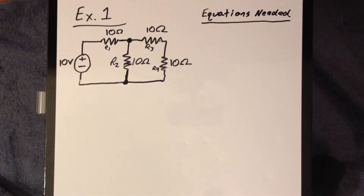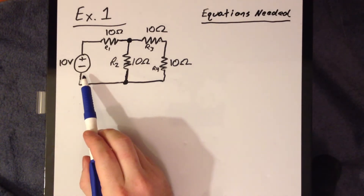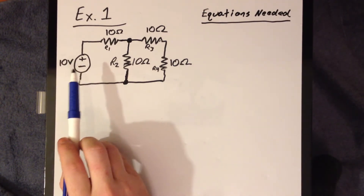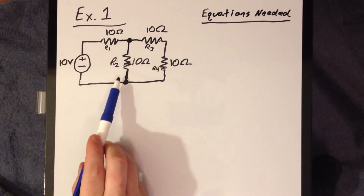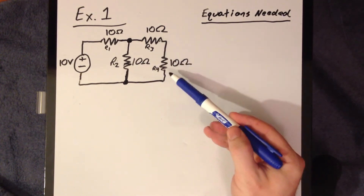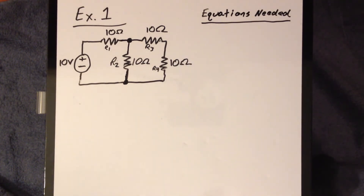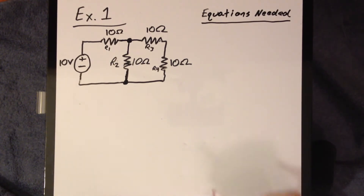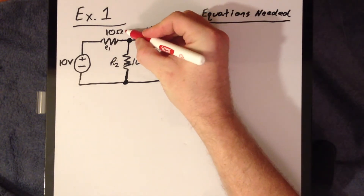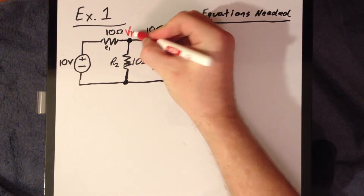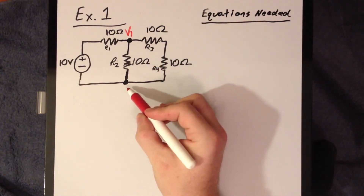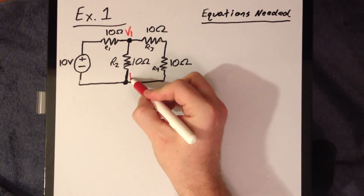For our first example, I've drawn a simple circuit that includes a 10-volt battery or power supply and 4 resistors — R1, R2, R3, and R4 — all with a value of 10 ohms. The first thing we need to do is identify our essential nodes. An essential node is a node with 3 or more branches going into it. We'll call this first one V1 and the other essential node in this circuit V2.